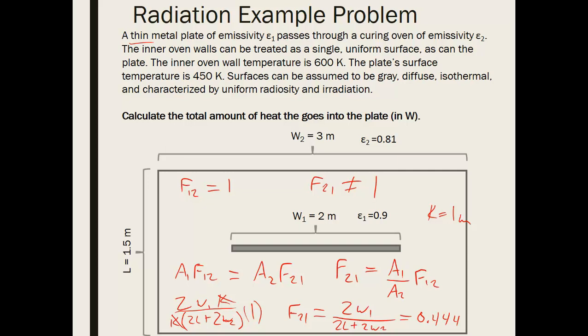So really what that tells us is that for all the radiation being reflected or emitted from these side walls, 44% of that is going to be intercepted by the plate, not 100% of it. Okay, so now we have our view factors.